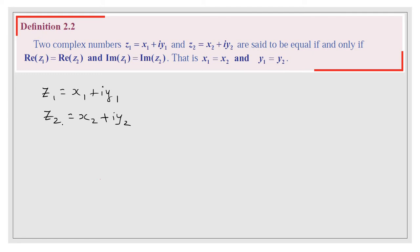So when can we tell z1 is equal to z2? This is true only when x1 is equal to x2, meaning the real part of z1 equals the real part of z2, and the imaginary part of z1, y1, is equal to the imaginary part of z2, y2. At the same time, if x1 equals x2 and y1 equals y2, then the corresponding two complex numbers are equal.